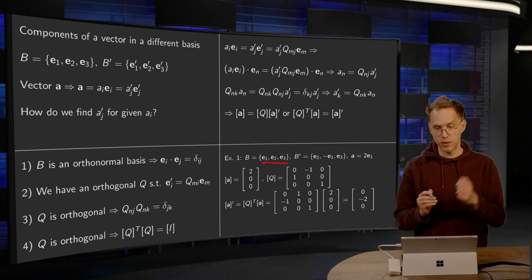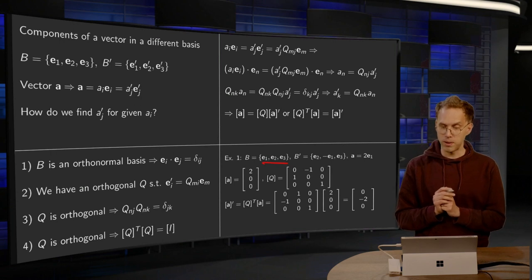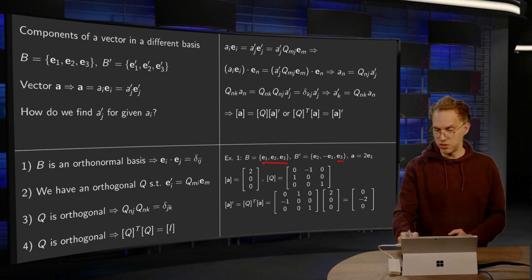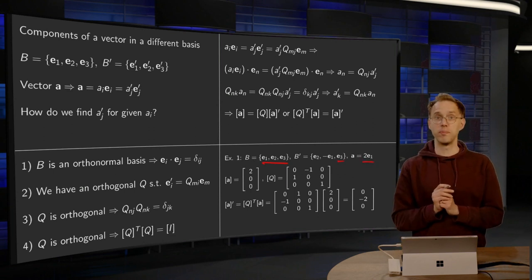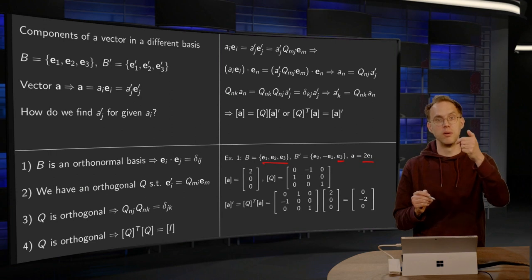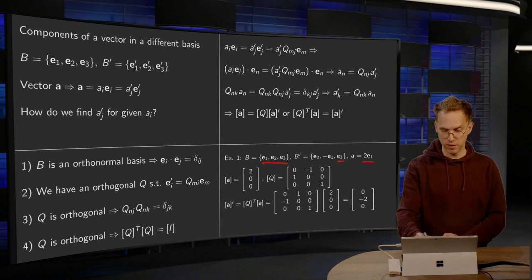So we have E1' equals E2, E2' equals minus E1, and E3' is just E3, and then we take some vector A and we just took two times E1 in this example. So, that means that the coordinate vector of A with respect to the standard basis is just two times E1 plus zero times E2 plus zero times E3, over here.